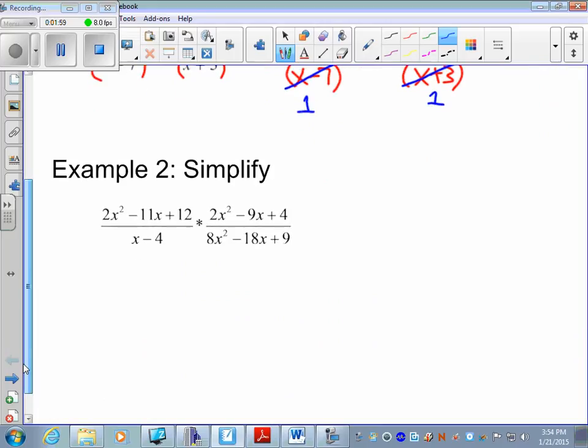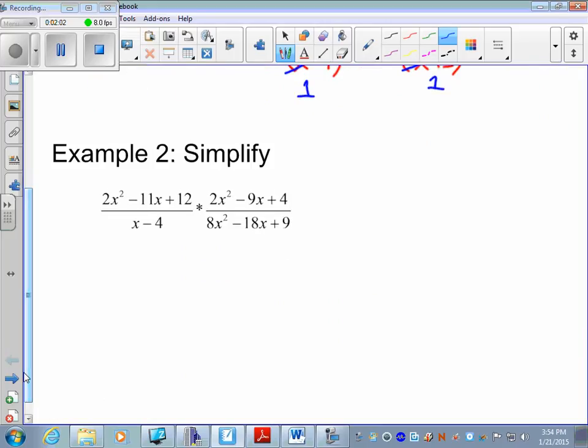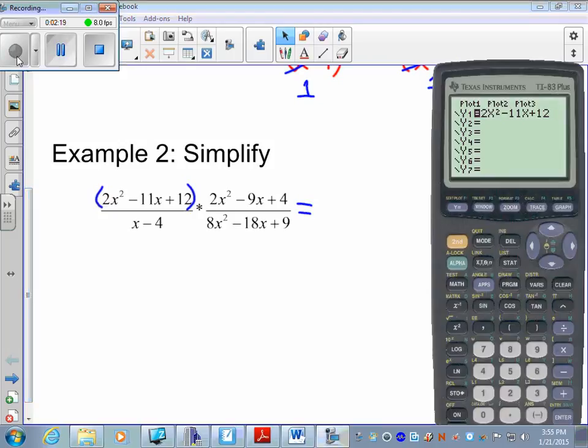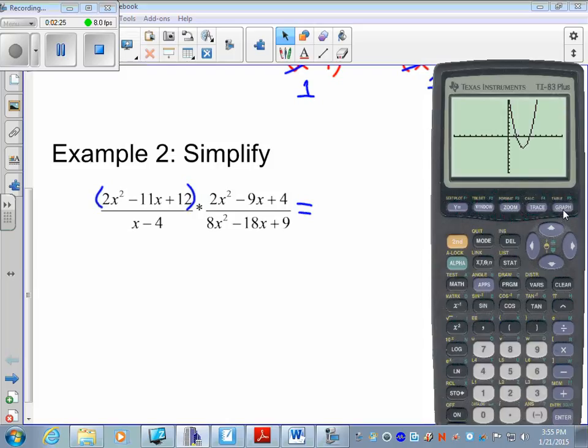Second example, we have two rational expressions again. You factor each numerator and denominator separately. To factor the first one, we're going to use the calculator. It's in the calculator, graph it. I'm going to look in the tables, nothing there.